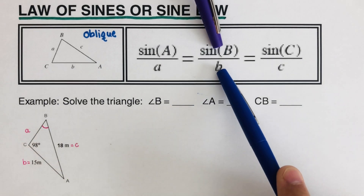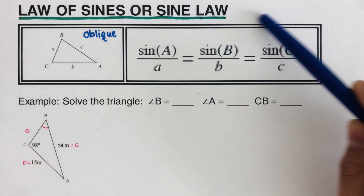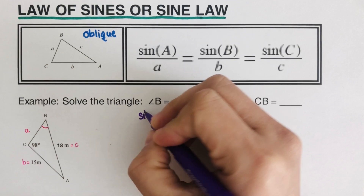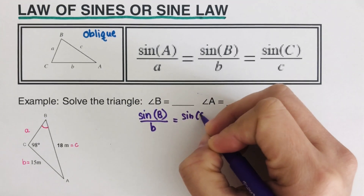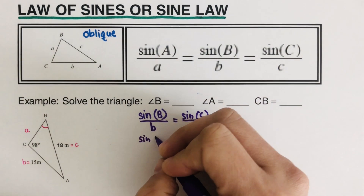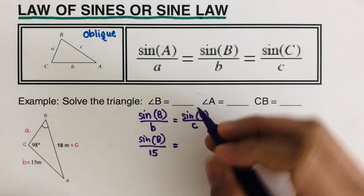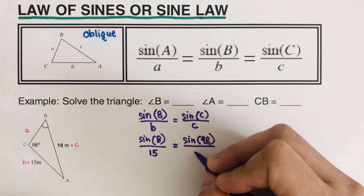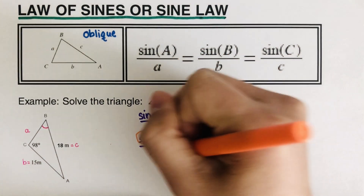We set up the equation: sine of angle B over b equals sine of angle C over c. Plugging in the values: sine B over 15 equals sine 98 over 18. From here we cross multiply: 18 times sine B equals 15 times sine 98. Then we divide both sides by 18, leaving sine B on the left.